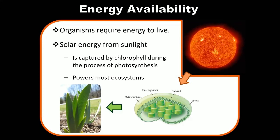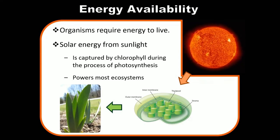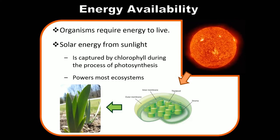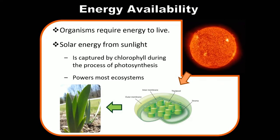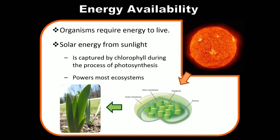Ultimately, the sun is the power source of all ecosystems. Not all areas have the same amount of sunlight — areas close to the equator have constant sunlight virtually year-round, whereas areas close to the poles have limited sunlight for at least part of the year. This is why we have winter and summer: the Earth's axis tilts toward and away from the sun, giving us more or less sunlight and longer or shorter days.